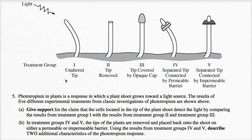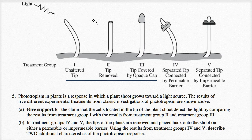We want to compare these first three treatment groups. When you have an unaltered tip, the whole plant is going to bend in the direction of the light. When you remove the tip, it no longer bends in the direction of the light. Or if you cover the tip with an opaque cap so the light can't go through it, it's still not going to bend. This is pretty good evidence that there's something about the tip of the plant that allows phototropism to occur — it allows the plant to know which direction the light is and then somehow causes it to bend in that direction.